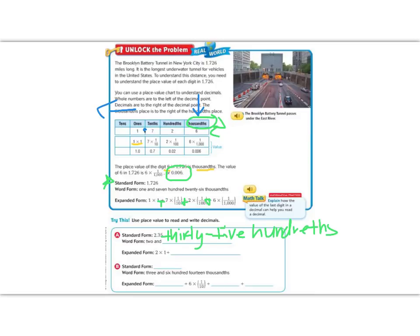In expanded form, the two is in the ones place. So, I have two times one plus the three is in the tenths place. So, I'm going to write it as three times one tenth. I'm going to put that in parentheses so that it stays neat. The next thing I have is a five, and the five is in the hundredths place. So, it's going to be five times one one hundredth.